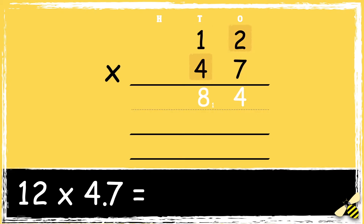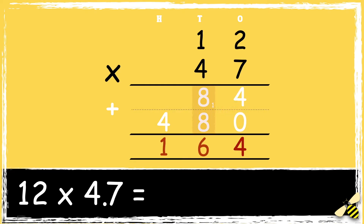Next we need to multiply 4 tens by 2. As we're multiplying by a number in the tens column, we need to use zero as a placeholder in the ones column. So 4 times 2 is 8. Then we multiply 4 tens by 1 ten: 4 times 1 is 4. The next step is to add the two answers together: 4 and 0 is 4, 8 add 8 is 16.